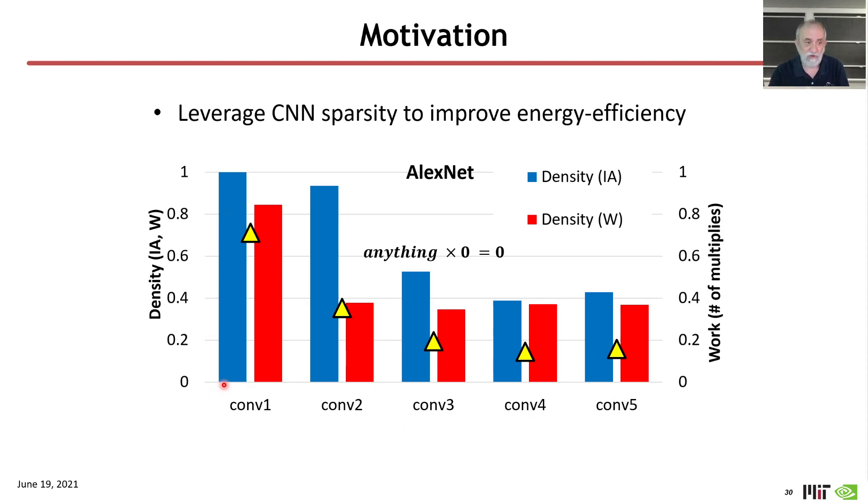So, one minus the sparsity of the computations, for input activations, and for the weights, and the yellow triangles are the aggregate number of effectual computations at each of the levels. And so, what you see is, although the density is pretty high in the early levels, in the later layers of the convolution,